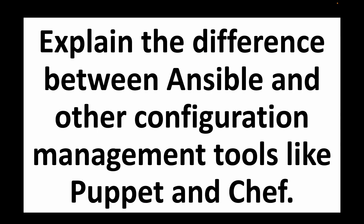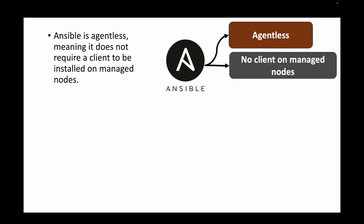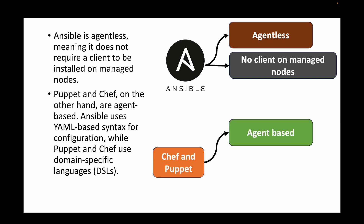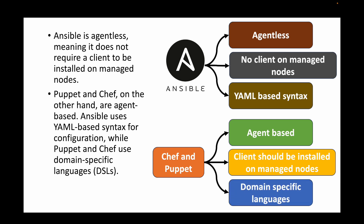The next question is: explain the difference between Ansible and other configuration management tools like Puppet and Chef. The main difference is that Ansible is completely agentless — no client or agent needs to be installed on the managed node, even if you have thousands of machines. Puppet and Chef, on the other hand, are agent-based and require installing an agent on every managed node. Ansible also uses YAML syntax for playbooks, whereas Chef and Puppet use domain-specific languages.